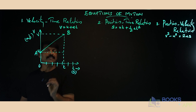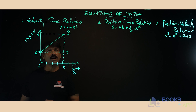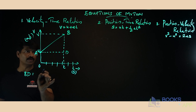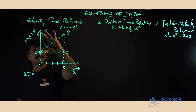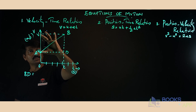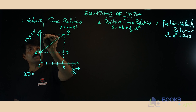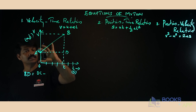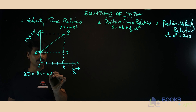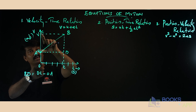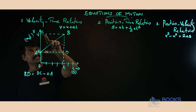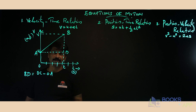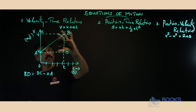Now let us draw a line from point A parallel to the time axis, and let it meet at point D. From the graph, BD is equal to OC minus OA. If OC is 50 and OA is 20, then BD equals 30. So BD equals OC minus OA.